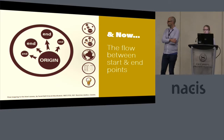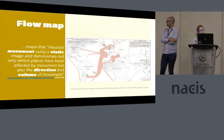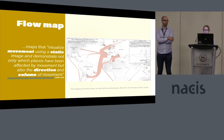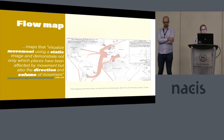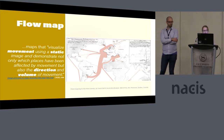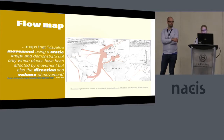But today we're just going to talk about the flow between the start and end points. Dr. Bernhard Jenny, in his recent CAGES article on flow maps, has a really great description of what a flow map is. He defines them as maps that visualize movement using a static image and demonstrate not only which places have been affected by movement, but also the direction and volume of movement.